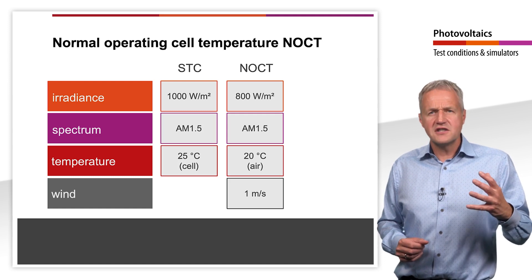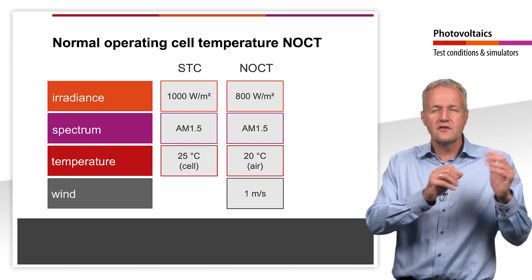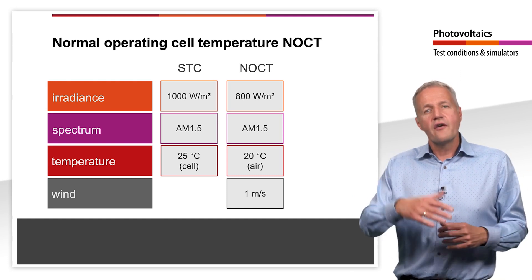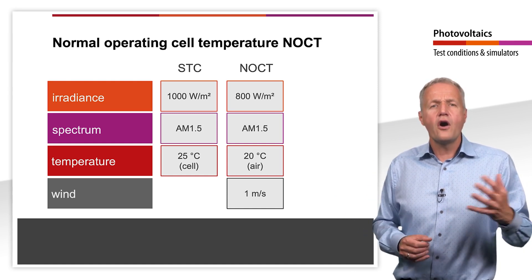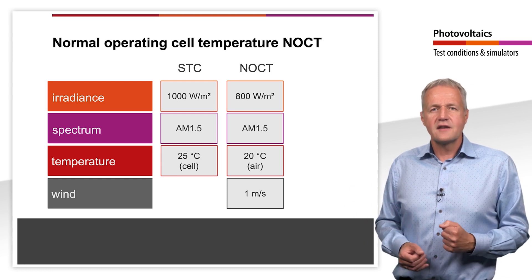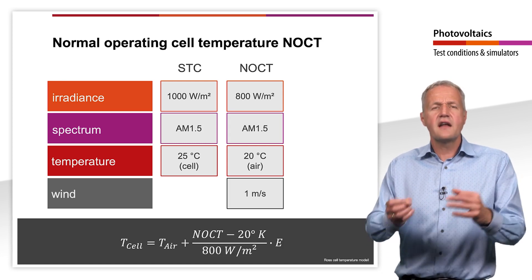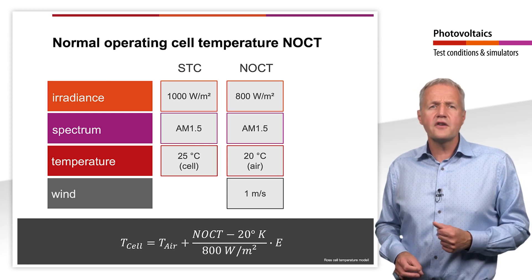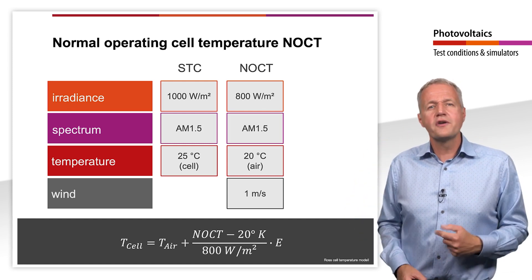With the NOCT, one knows the temperature of a specific module that occurs under the conditions just mentioned. Typical NOCTs of solar modules are around 48 degrees Celsius, with extreme values between 33 degrees Celsius and 58 degrees Celsius. In reality, however, both the irradiance and the ambient temperature vary. Therefore, it is also of interest what the temperature is on a particularly hot summer day or a cold winter day. To calculate this temperature, the formula shown here can be used. In addition to the ambient and NOCT temperatures, the irradiance is also included in the calculation.